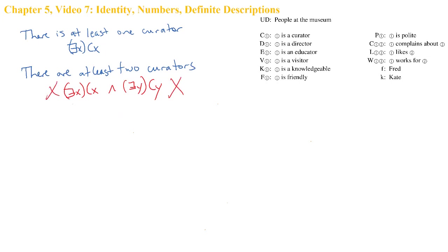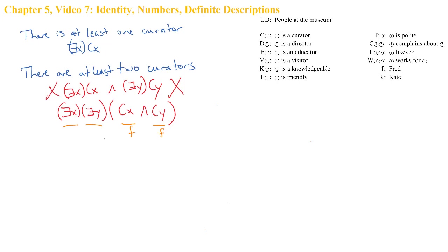Another attempt might be to overlap the scope of the two quantifiers. This perhaps gets us a little bit closer, but still is a mistake. Because all it really says is that there is some x such that there is some y, that x is a curator and y is a curator, but there's nothing to ensure that x is different from y. x might take the same value as y. So if there is only one curator, this is still true — we can find an object, say Fred, to go in for both x and y. So that attempt won't work either.